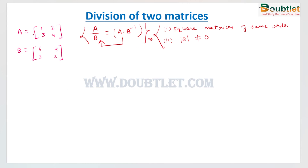For the example, I have taken two matrices of order 2×2. The orders are the same, and we will check the determinant of B first to see whether it is zero or not. We can write it as 12 minus 8, so the determinant is 4, which is not equal to zero — it means division is possible.